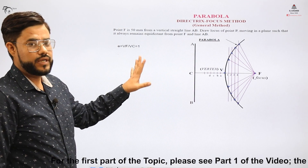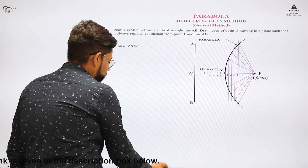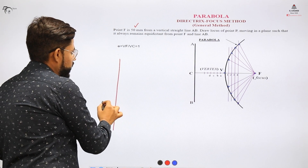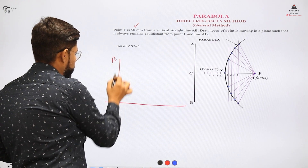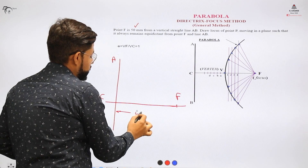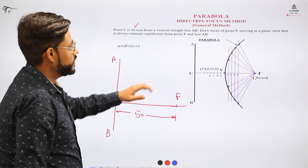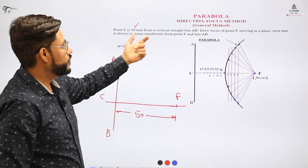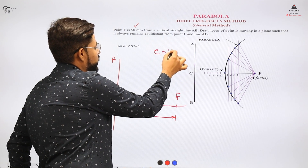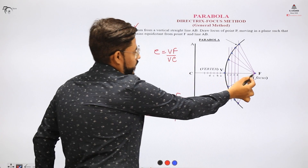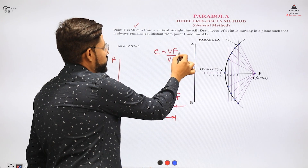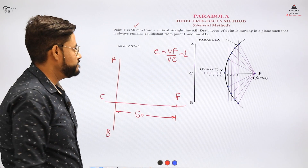We'll learn the concept with the help of this question, similar to the previous one. The distance of the point from the vertical line is 50. We'll sketch a directrix and have points A, B, and the central point C, with the distance to the focus as 50 units. We draw the locus of a point moving such that it always remains equidistant from point F. The eccentricity is VF over VC — the distance from the fixed point to the fixed line — and if it equals one, it indicates a parabola.